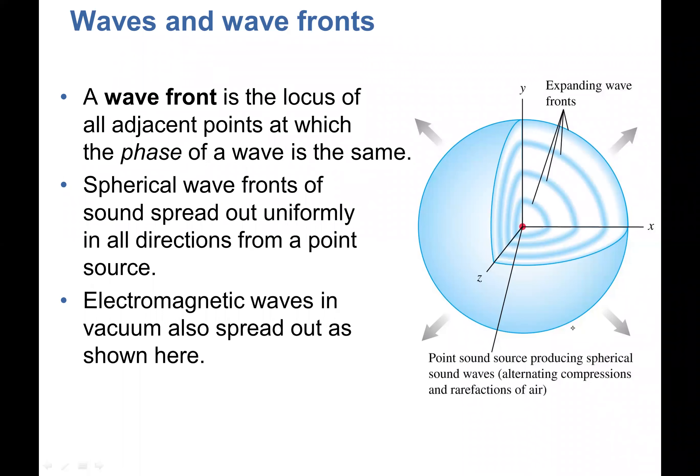We continue with waves and wavefronts. Now that we understand that light is an electromagnetic wave that propagates with different speeds in different mediums, and has the same properties as any wave — it has a wavelength, a frequency, and we can use wavelength and frequency to calculate the speed of light. Let's talk about how we can represent light. There are two models we're going to consider.